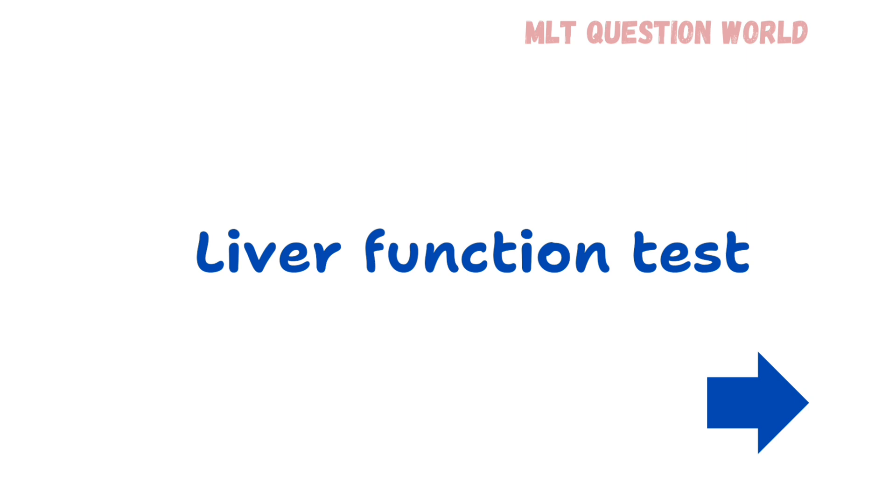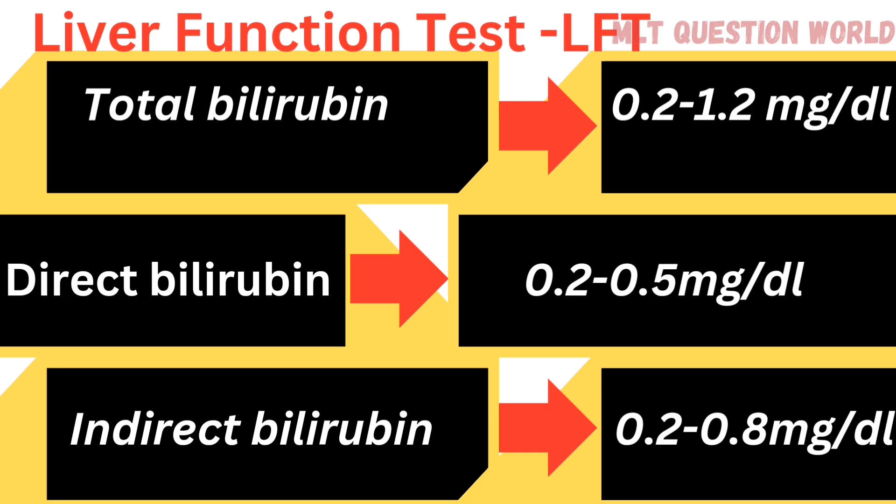Starting with liver function test (LFT), we have bilirubin, SGOT, SGPT, total protein, albumin, globulin, and A/G ratio. Total bilirubin is 0.2 to 1.2 milligram per deciliter. Direct bilirubin is 0.2 to 0.5 milligram per deciliter.